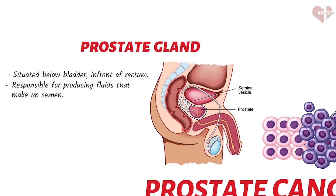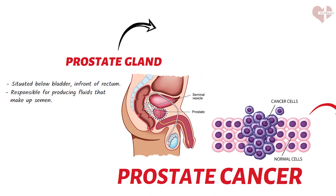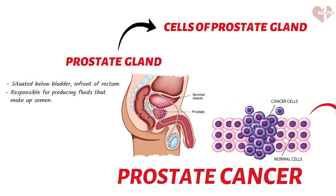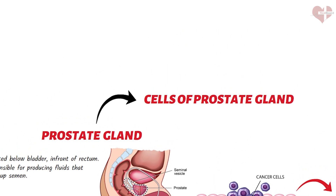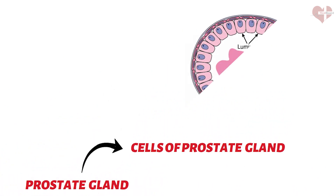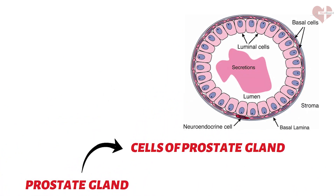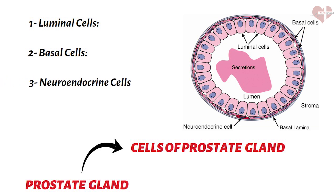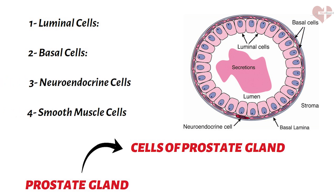The prostate gland is made up of different types of cells that perform different functions. The main types of cells in the prostate gland are glandular epithelial cells, basal cells, neuroendocrine cells, and smooth muscle cells.